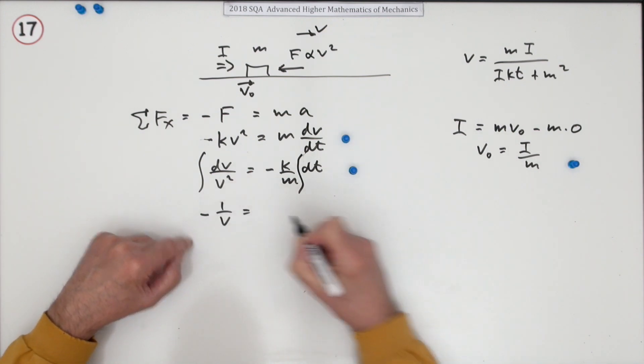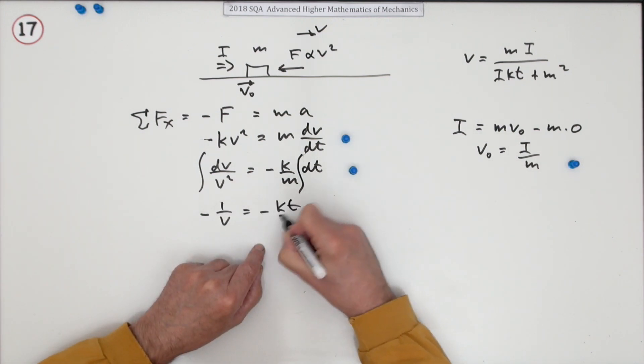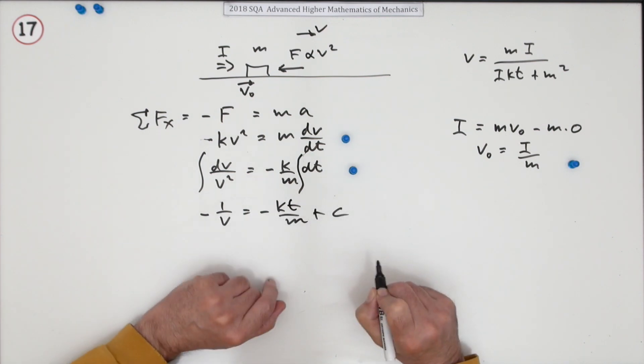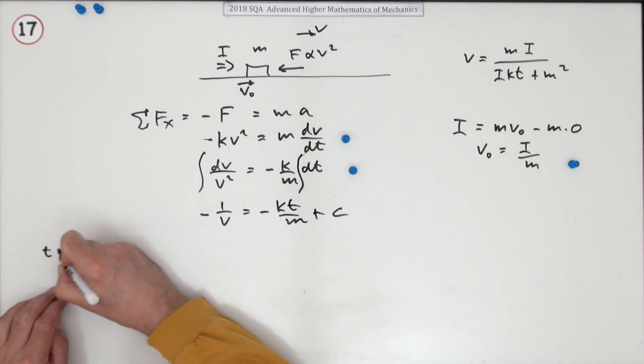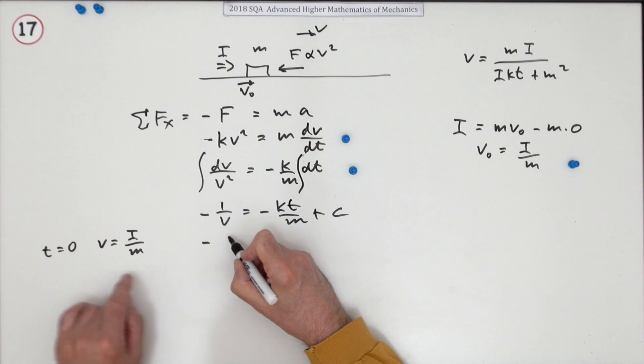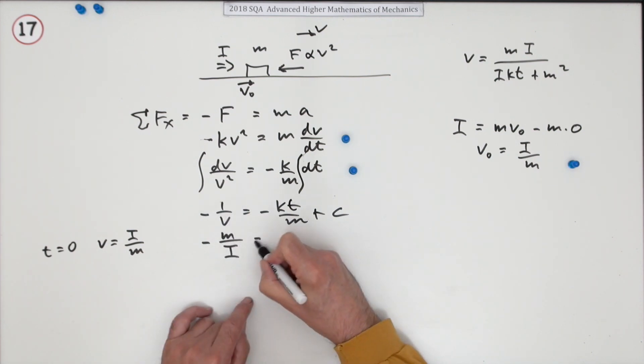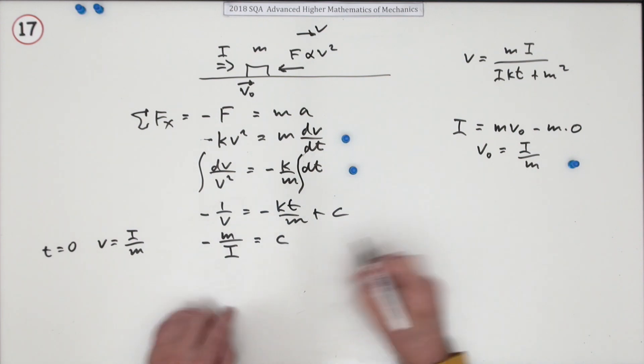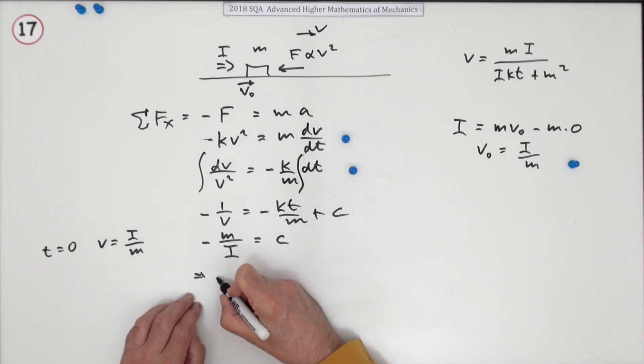So negative 1 upon V would be negative K T upon M plus C. Then put in the initial conditions, which are when T is 0, V is I upon M. So substituting the 1 upon V will be the reciprocal. Negative M upon I would be C. So now you could put that back into this one here.